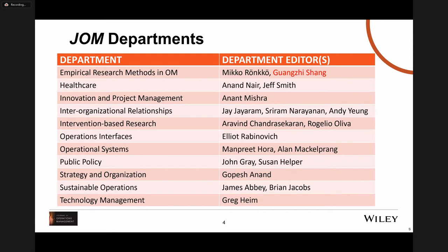At JOM in terms of departments, the top department is Empirical Research Methods and Operations Management. I'm delighted to announce that Guanji Cheng is joining Mikko Renko as co-department editor as of September 1st. We also have departments for Healthcare Innovation and Project Management, Interorganizational Relationships, Intervention-Based Research, Operations Interfaces, Operational Systems, Public Policy, Strategy and Organization, Sustainable Operations, and Technology Management. There is a matrix organization between the Empirical Research Methods Department and the other departments.